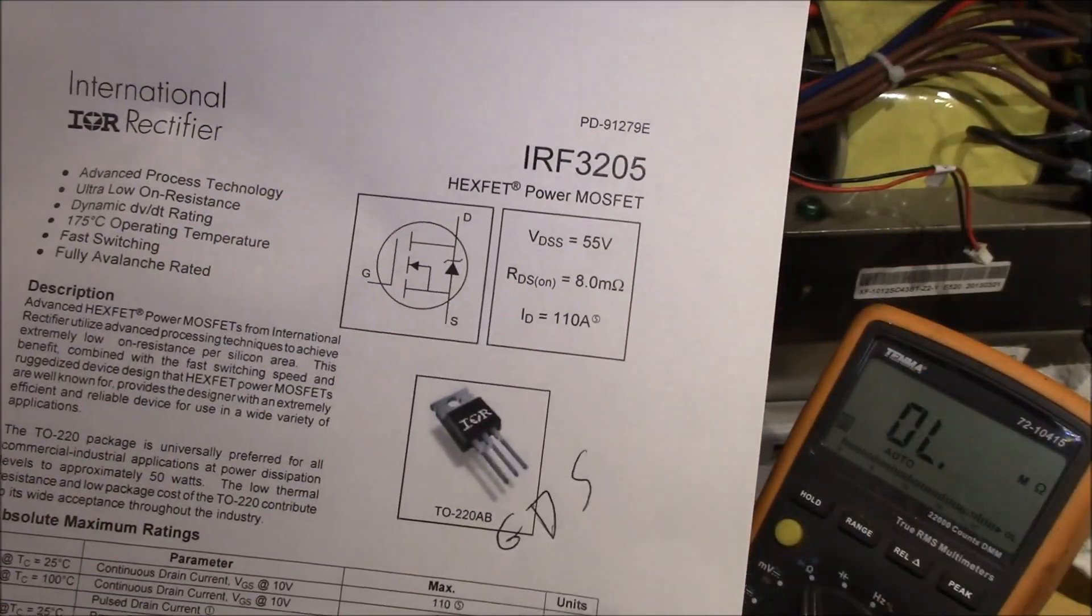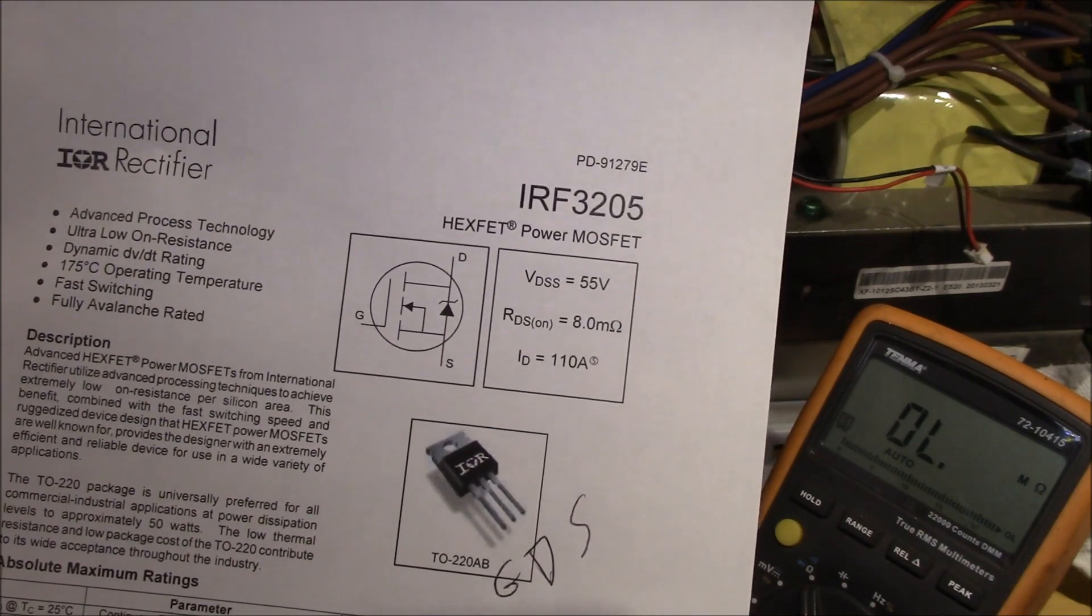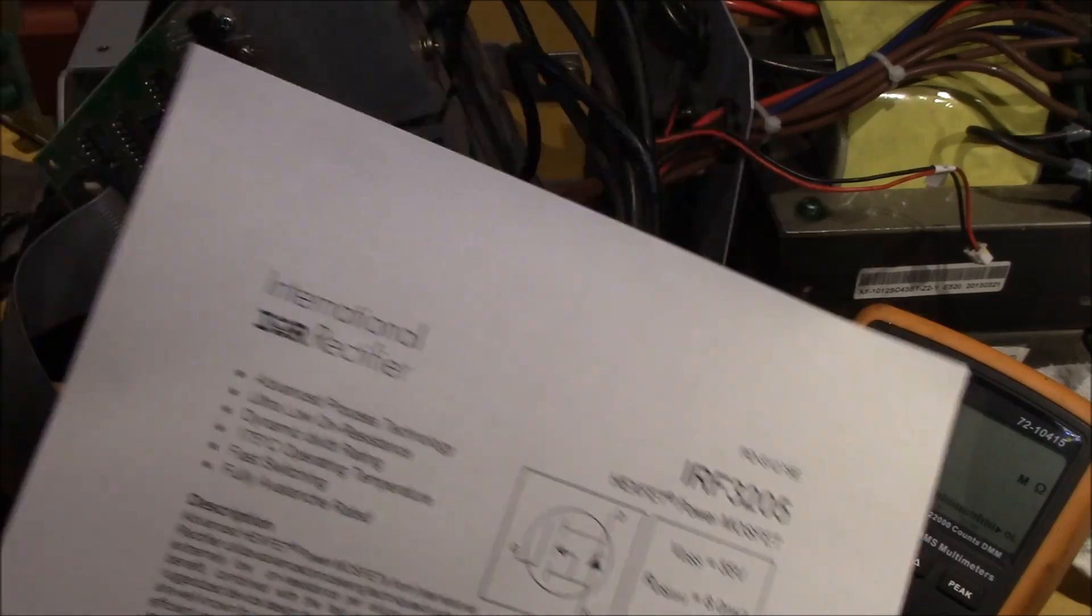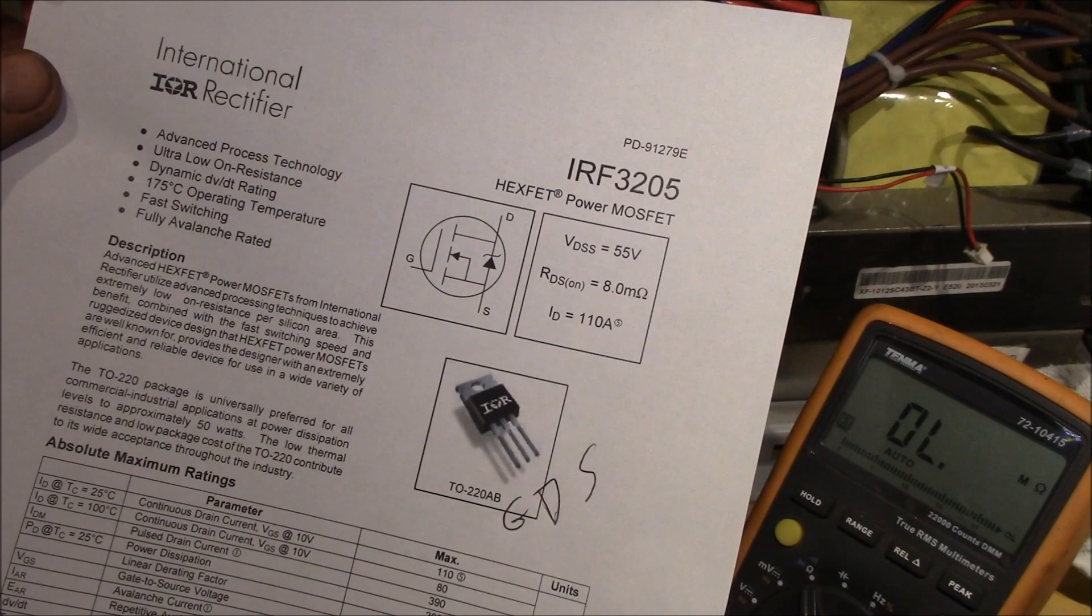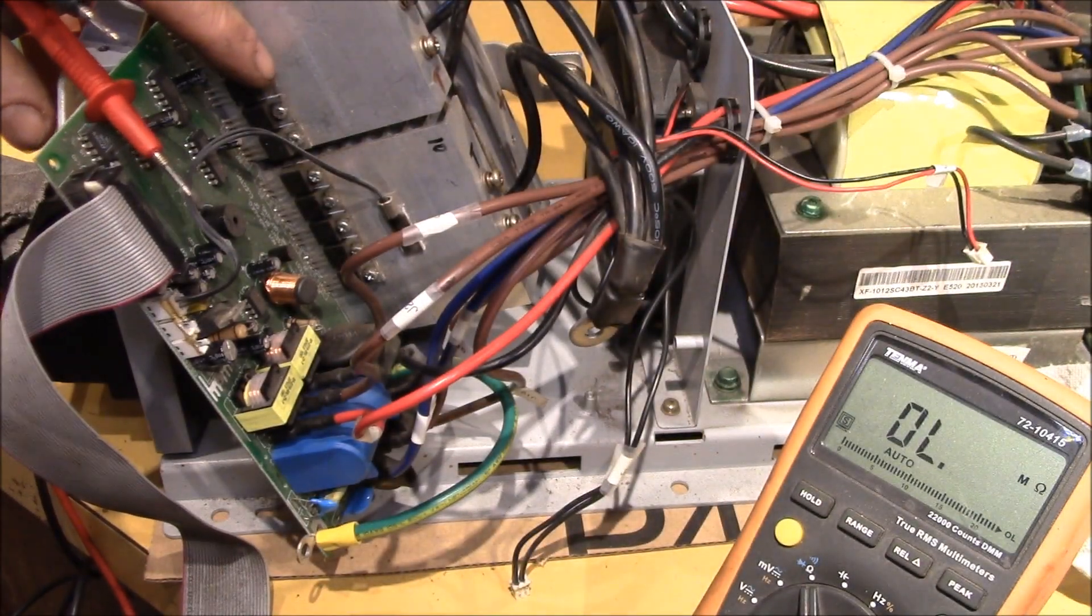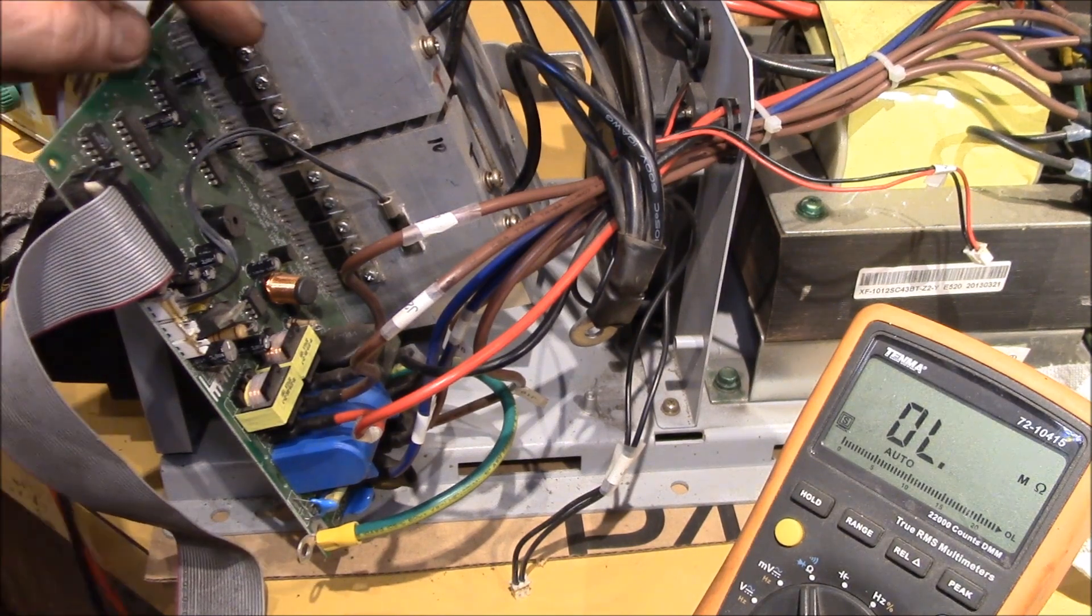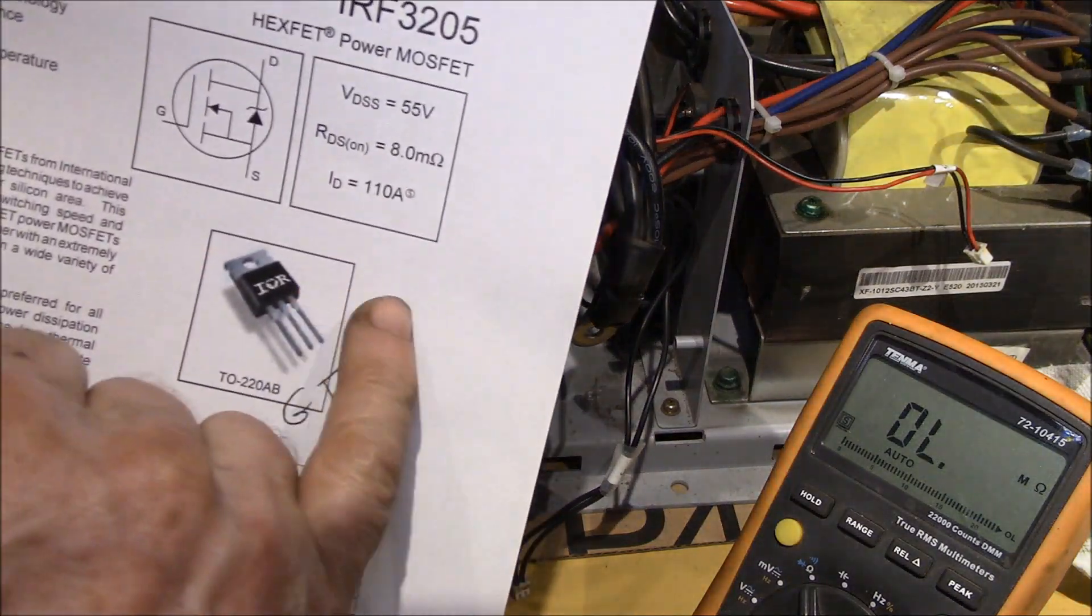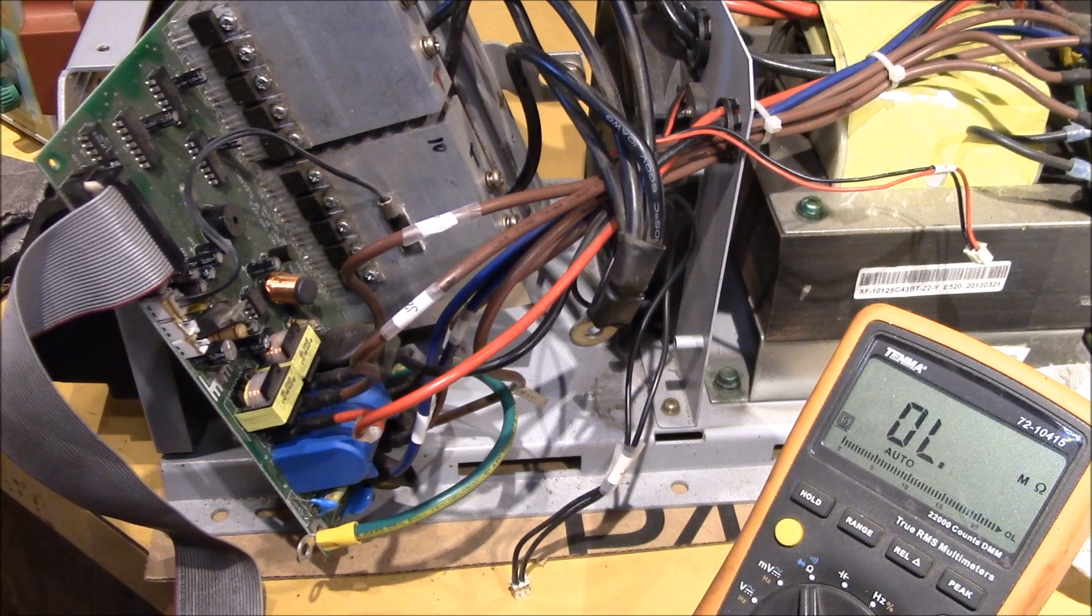So I've been checking out the MOSFETs here. They use the IRF3205 rated at 55 volts, 110 amps. And they have five in parallel, so that would be like 550 amps total. And the surge current on this 12 volt, 1000 watt inverter, I've seen upwards of 200 amps.